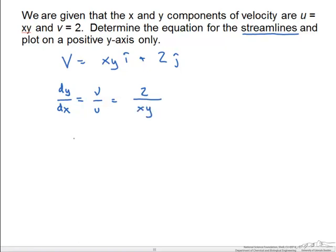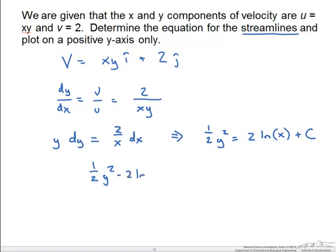Now we separate this and integrate. We get y dy is equal to 2 over x dx. And after integration we get the following. So our streamlines will have the function of 1/2 y squared minus 2 natural log of x. And this will be equal to some constant.